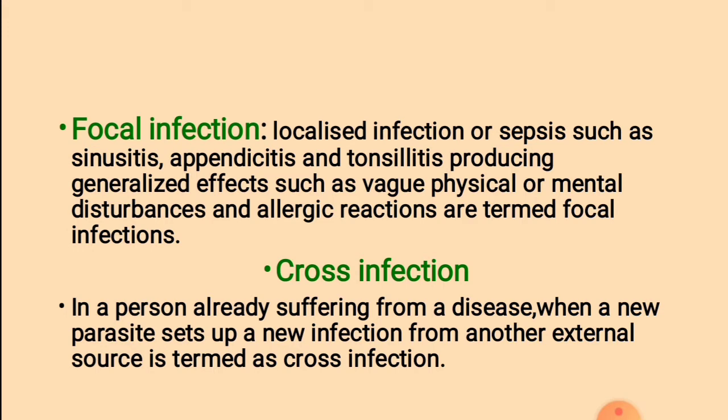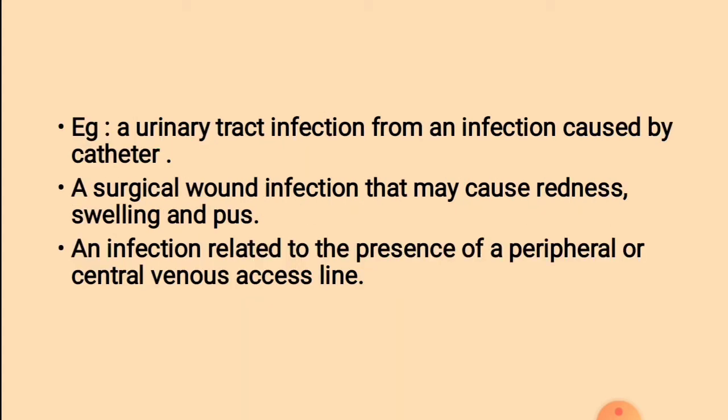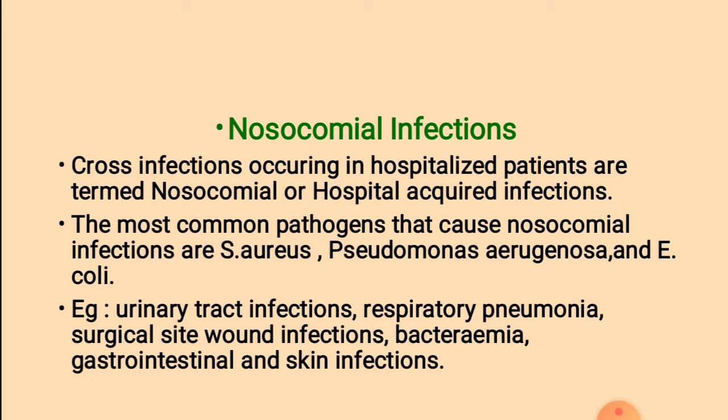Cross infection: In a person already suffering from a disease, when a new parasite sets up a new infection from another external source, it is termed cross infection. For example: a urinary tract infection from a catheter, a surgical wound infection causing redness, swelling, and pus, or an infection related to the presence of a peripheral or central venous access line. The most important cross infection is known as nosocomial infection.